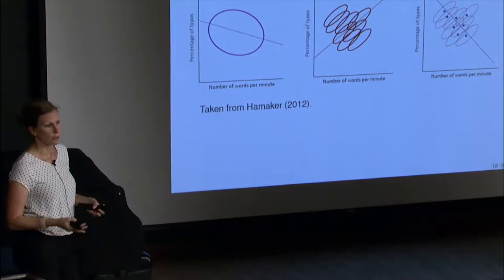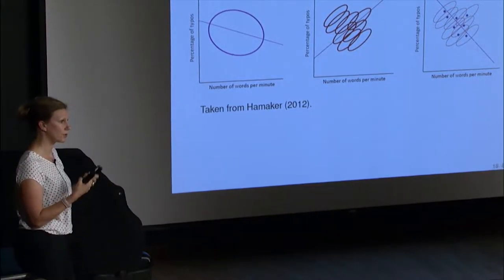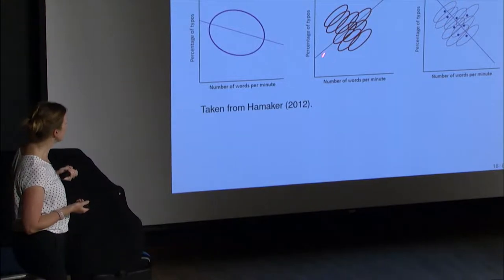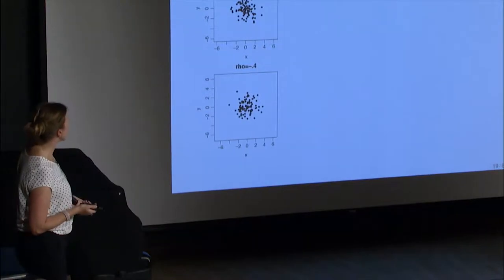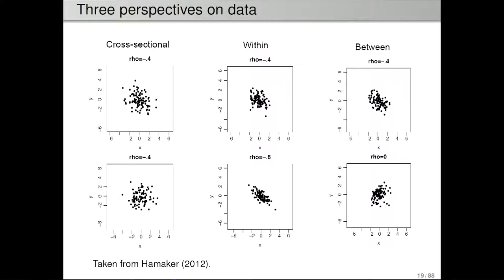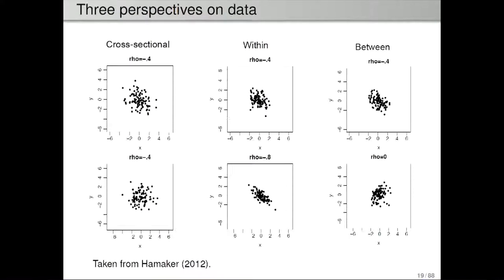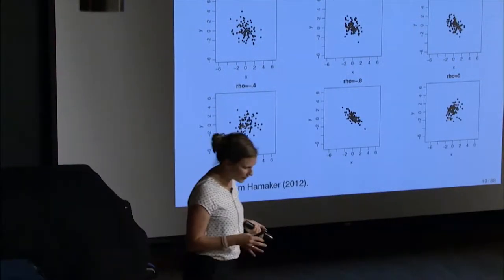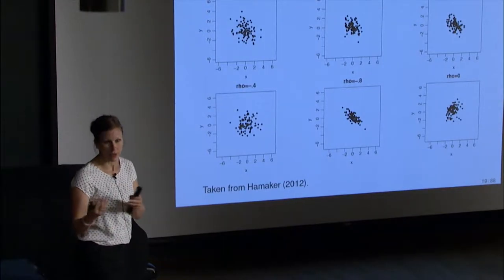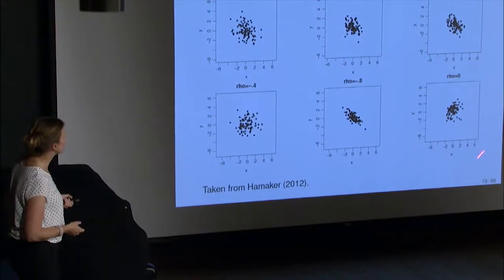But if we have multi-level or intensive longitudinal data — repeated measures of the same people across multiple persons — then we can actually separate those two parts and find out what the within-person relationship is and what the between-person relationship is. Cross-sectionally we might have a correlation of minus 0.4, but this might be because within and between it's also minus 0.4, or it could be that within there's minus 0.8 whereas between is zero. Adding to the confusion, some people refer to cross-sectional data as between-person data, but part of cross-sectional variance is stable between-person and part is temporary within-person — the trait part and the state part.